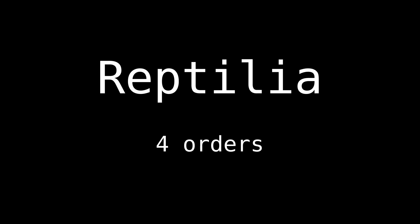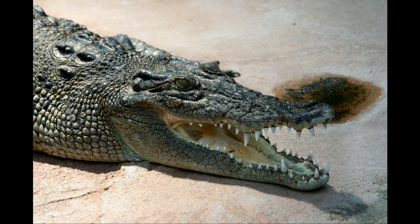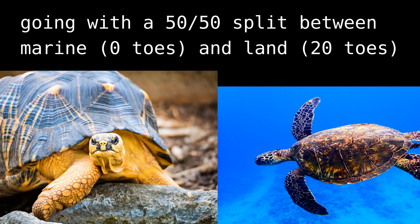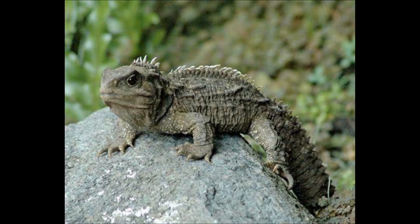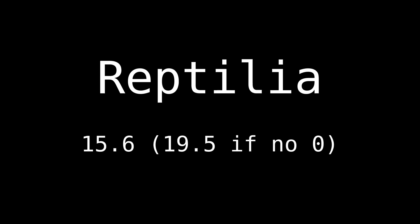Next up, we've got Reptilia, the second smallest class, with only four orders. Crocodilia — those are crocodiles — have five toes in the front and only four on their hind legs, which gives them a total of 18. Testudines have ten toes. Rhynchocephalia have 20 total. And Squamata has 14.66 toes on average, given the varied amount of toes throughout their families.